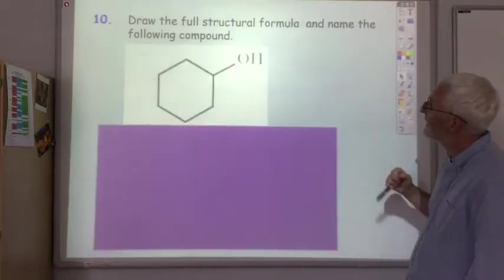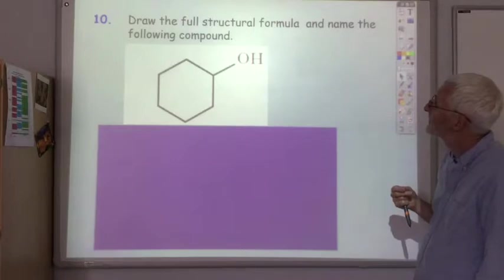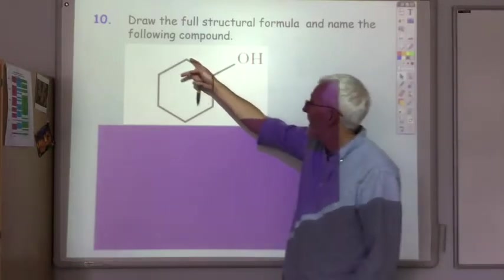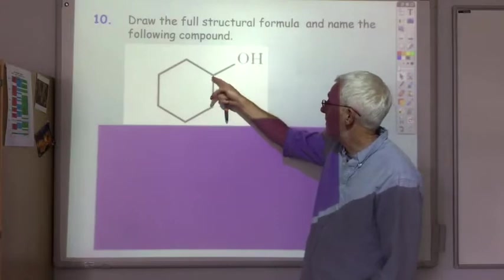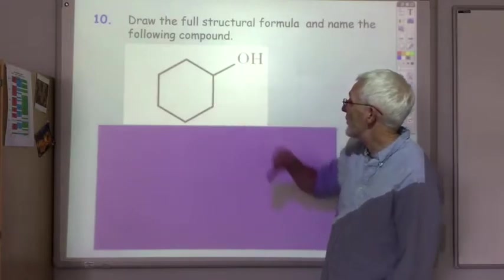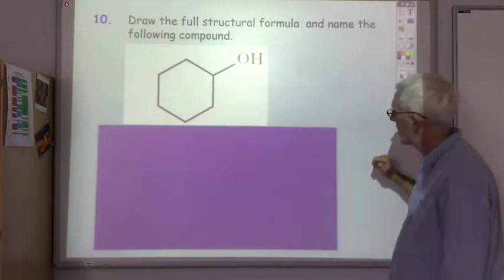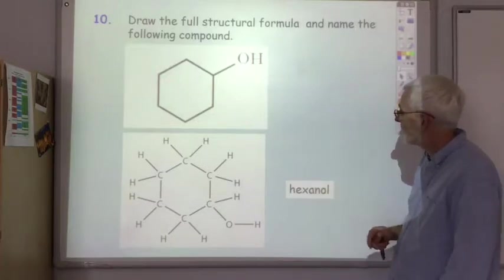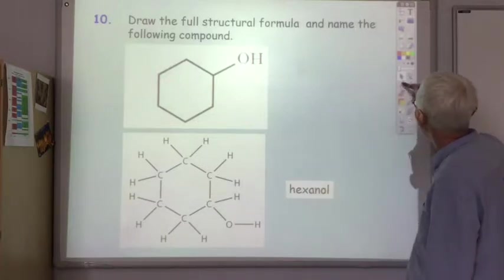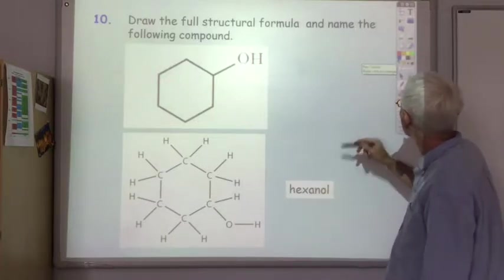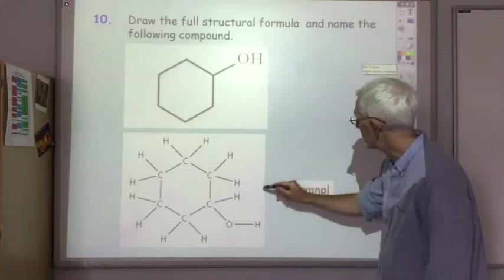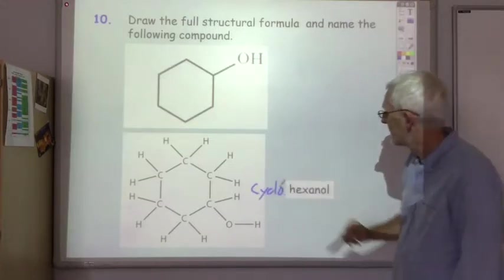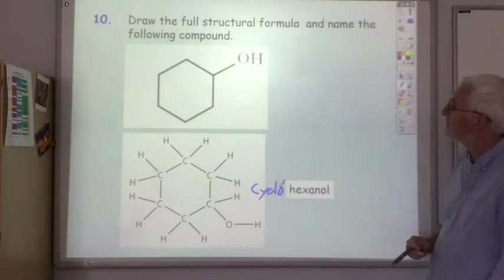And finally, we've got a ring of six carbons with an OH group on one of them. So we've got cyclohexanol.